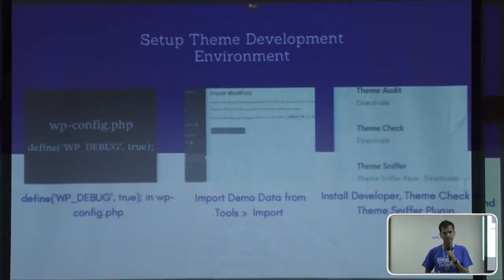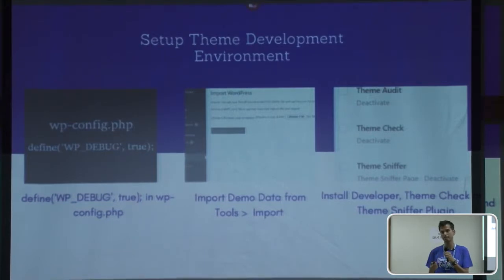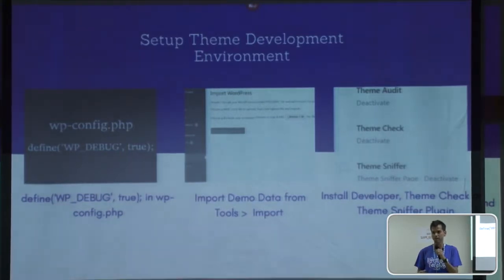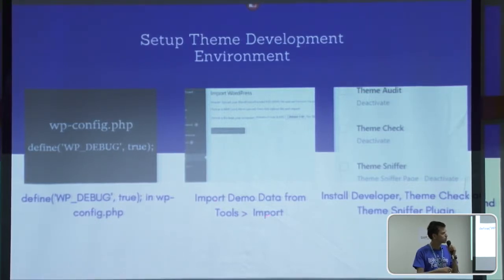If you are a developer or if you are planning to start theme review, set up your theme developing environment first. You need to enable debug true in the wp-config.php file, because it shows errors and warnings while developing themes. Check this file wp-config.php and enable the debug true mode.